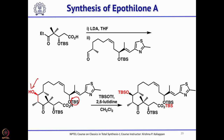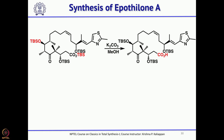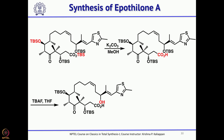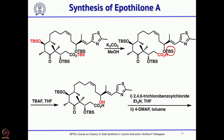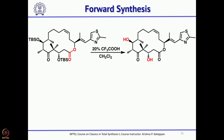Then both TBS groups needed to be removed. Potassium carbonate in methanol first removed the TBS ester. Subsequently, one equivalent of TBAF selectively removed the TBS ether, followed by Yamaguchi's macrolactonization to give the macrolactone.